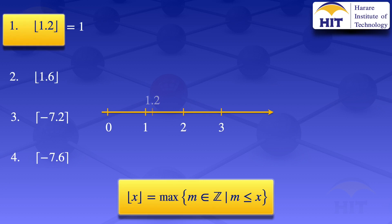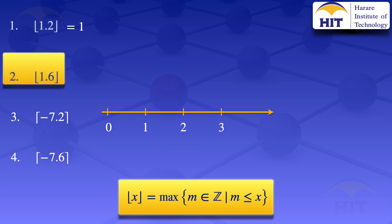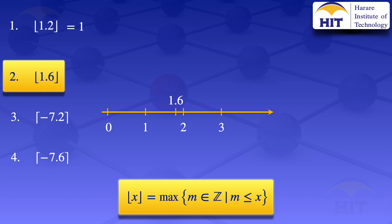Moving on to question number 2, the floor value of 1.6. I'll indicate 1.6 on the number line. We are looking for the greatest integer that does not exceed 1.6. Integers that do not exceed 1.6 are integers to the left of 1.6 on the number line. The greatest of those integers is 1.